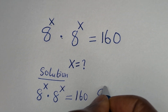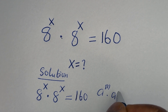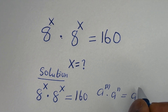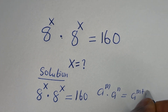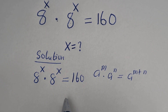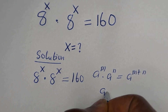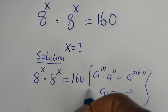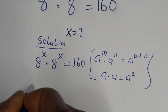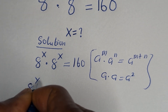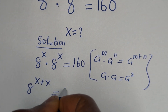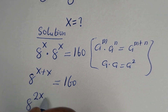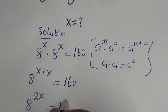If you have a raised to power m multiplied by a raised to power n, this is equal to a raised to power m plus n. Then if you have a multiplied by a, this is a squared. So this can be written as a raised to power s plus x is equal to 160, and this is a raised to power 2x is equal to 160.